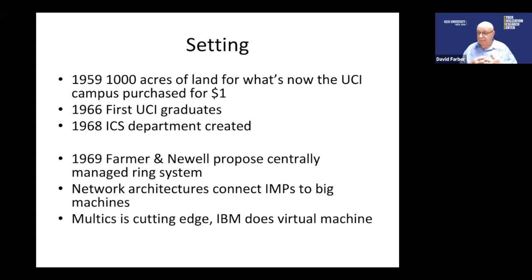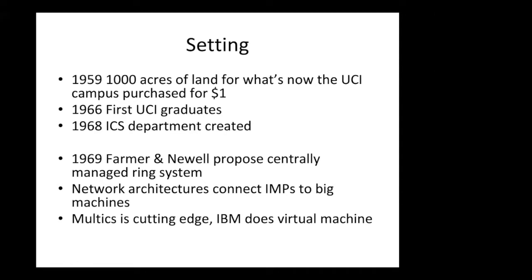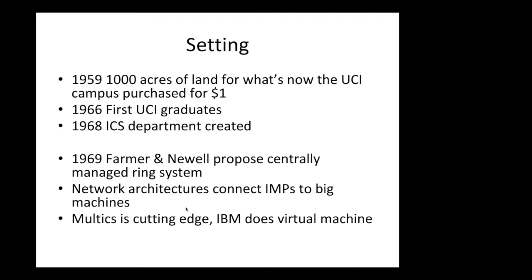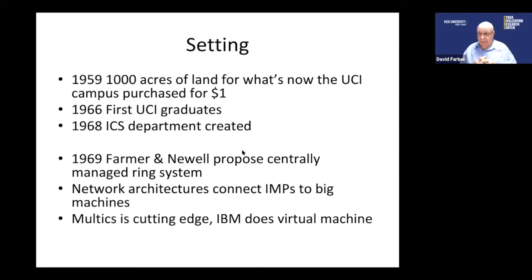The ARPANET was just starting — the IMPs were connecting the initial ARPANET together. There were some local networks: Neil Farmer and John Pierce at Bell Labs had ring networks, but they were essentially managed. Operating systems: Multics was the cutting edge, and there were some experiments in virtual machines, but it was really the beginning of the exponential curve of computing equipment.